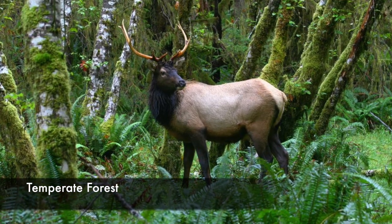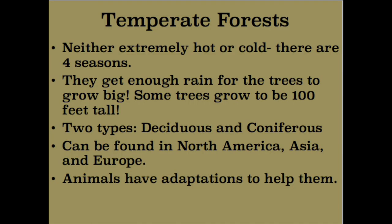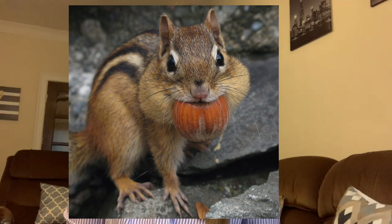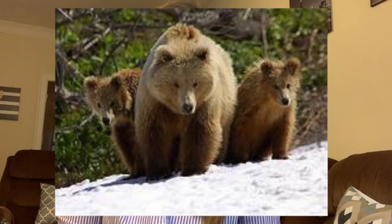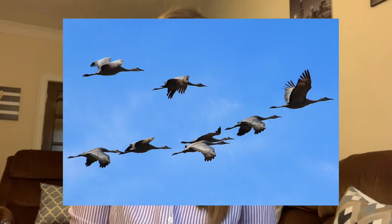Now let's talk about temperate forests. Temperate forests are neither extremely hot nor extremely cold, and they actually have four seasons. They get enough rain for trees to grow big, just not as big as trees in the rainforest, but some can grow to be 100 feet tall. There are two types — deciduous and coniferous — and temperate forests can be found in North America, Asia, and Europe. Because there are four seasons and the weather changes, animals have to adapt. For example, squirrels and chipmunks gather and store nuts in the fall to eat in colder months. Bobcats, brown bears, and timber wolves grow thick coats to keep warm in the winter, and birds and butterflies fly to warmer climates in the winter and return in the spring.